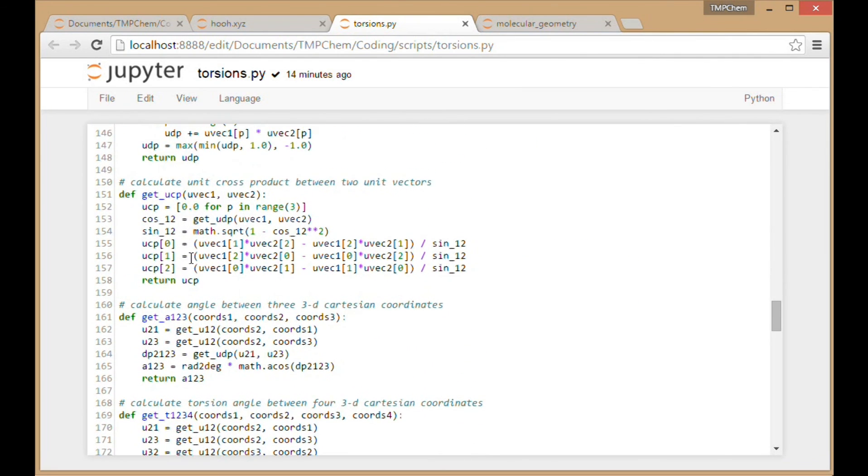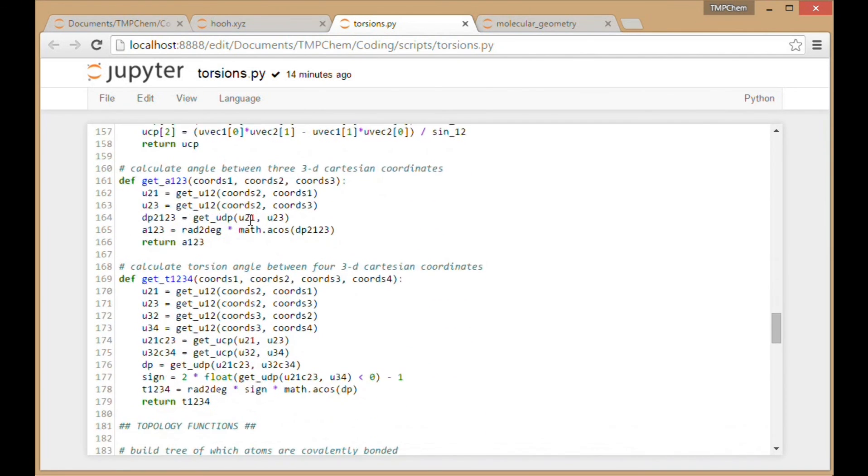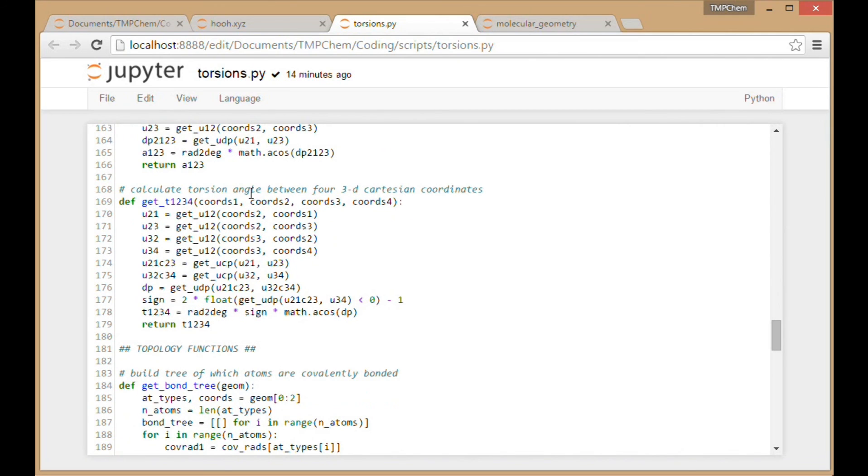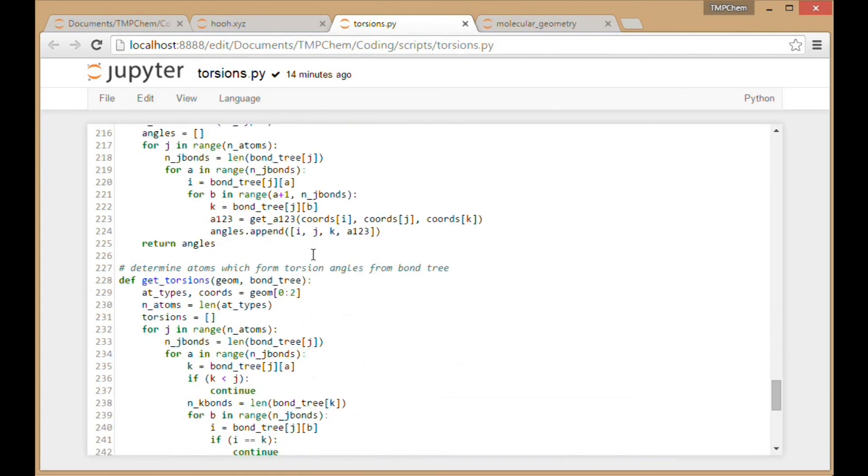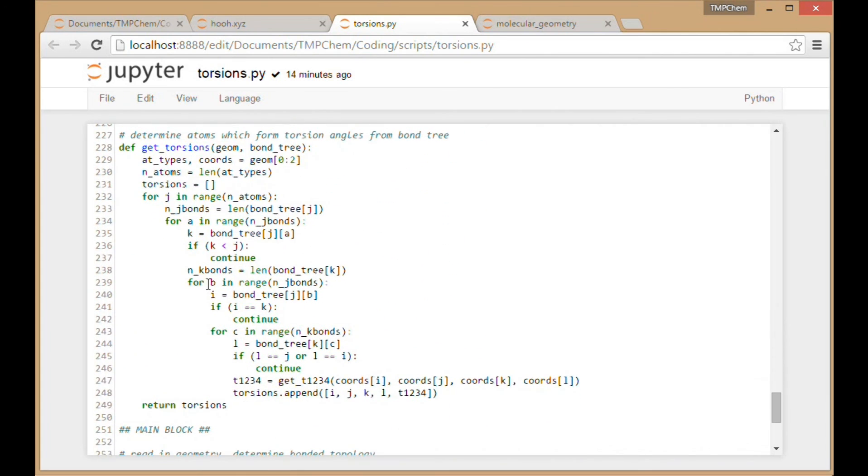We very much do need the cross product function now. So we have discussed why we're going to need that. We have this function for getting the torsion angle. You see the four unit vectors, two cross products, and the dot product of those cross products, getting the sign, returning the final value there. And there's also going to be a function to get the individual torsions when we have IJ is bonded, JK is bonded, and KL is bonded. So that's what's inside of all that four loop business there.